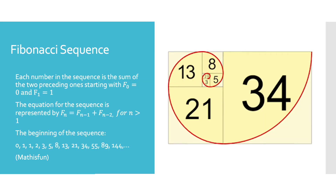The Fibonacci sequence begins with 0, 1, 1, 2, 3, 5, 8. Each number in this sequence is the sum of the two preceding ones, starting with the initial number 0 and the following number 1. So when you add these numbers up: 0 plus 1 equals 1, 1 plus 1 is 2, 2 plus 3 is 5, 5 plus 8 is 13, and so on and so forth. The equation for the sequence is represented by F sub n equals F sub n minus 1 plus F sub n minus 2, for any nth term greater than or equal to 1.